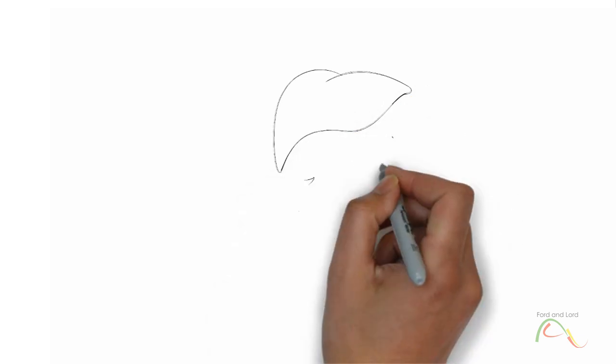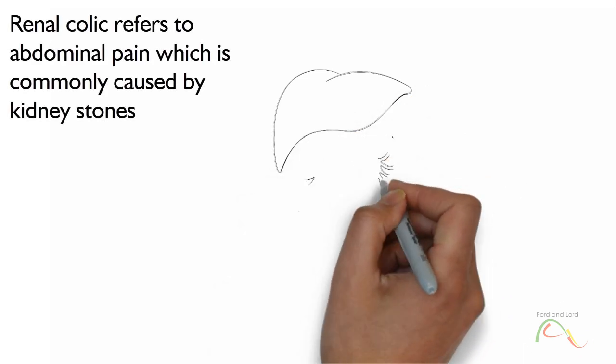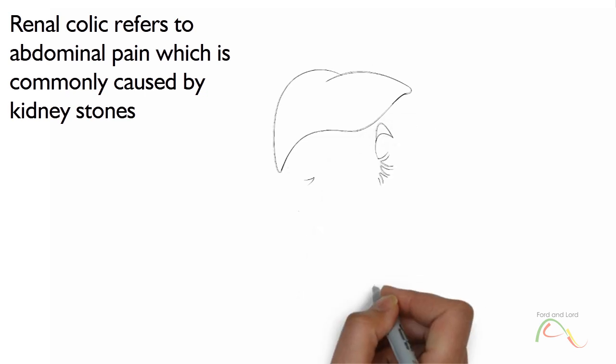Renal colic refers to an acute onset of flank pain which radiates to the groin or genitals.